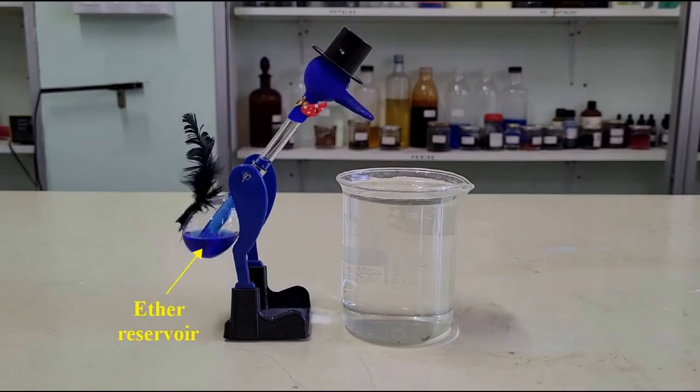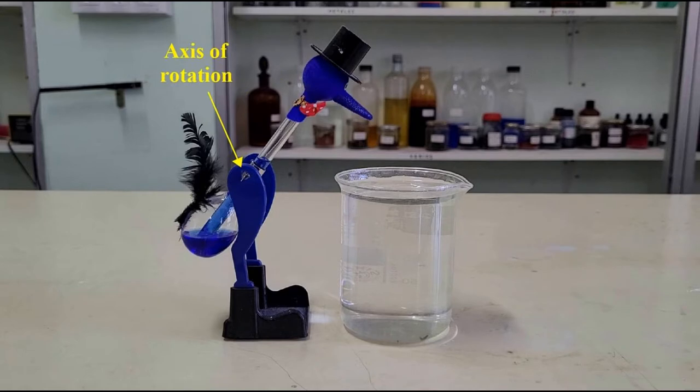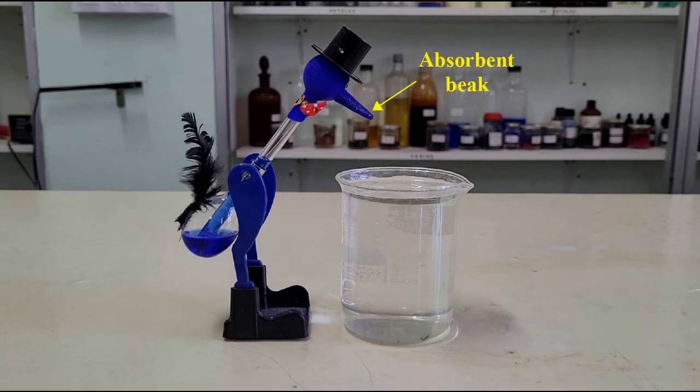The bird consists of the following parts: ether deposit. Ether is a very volatile liquid, that is, it evaporates easily. Long tube, axis of rotation, and absorbent beak.